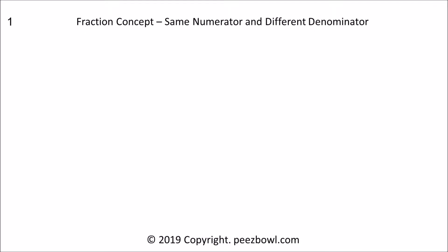In this video, I am going to explain about a second fraction type, which is having same numerator but different denominator. By end of this session, you will learn simple addition and subtraction on these type of fractions. Below, I will write few fractions: 3 upon 4, 3 upon 7, and 3 upon 9. These three fractions are examples of same numerators and different denominators.